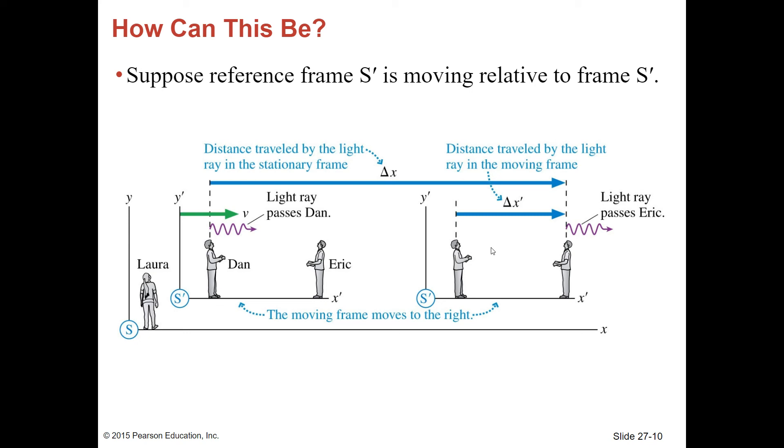But this frame is moving relative to Laura. So the distance traveled by the light ray in the stationary frame seems to be this distance. We'll call it delta X.